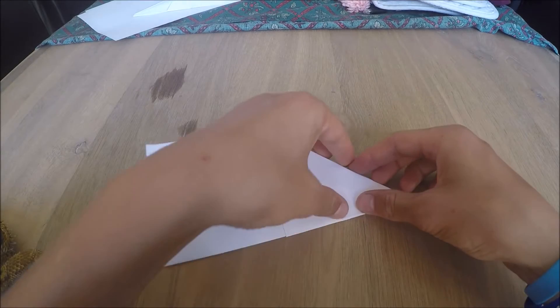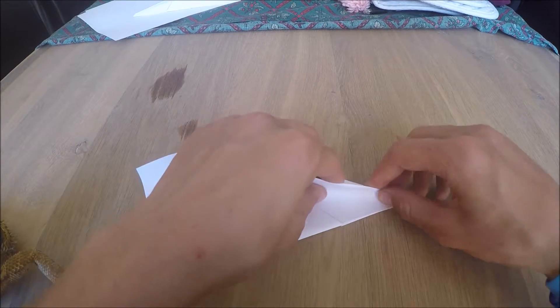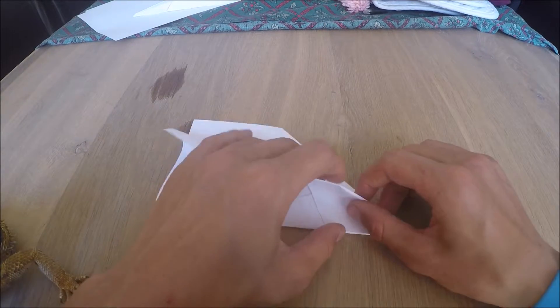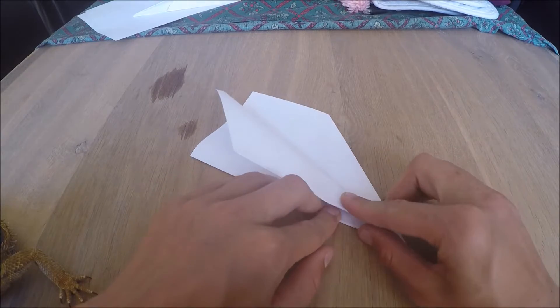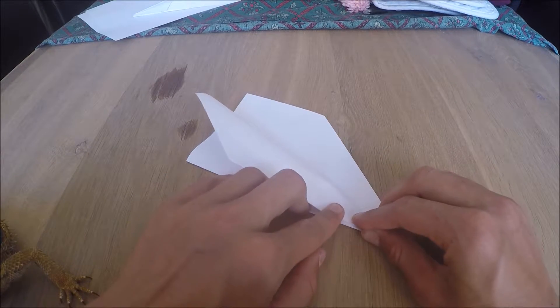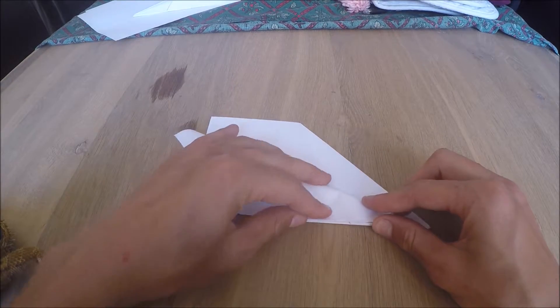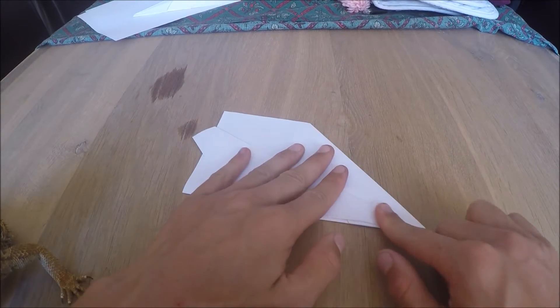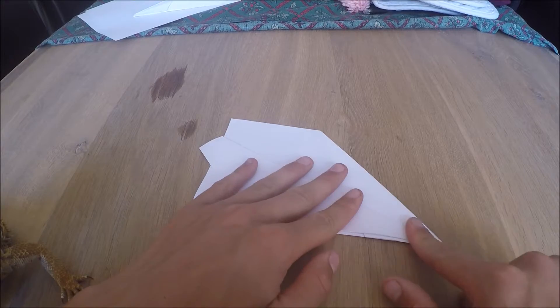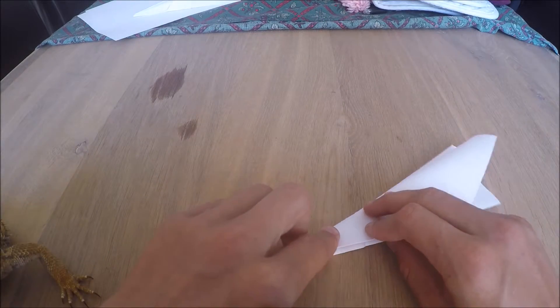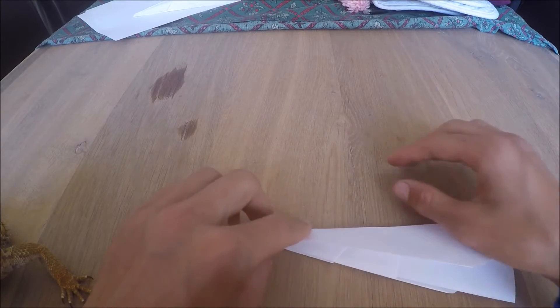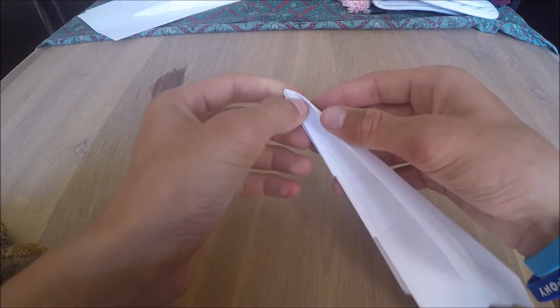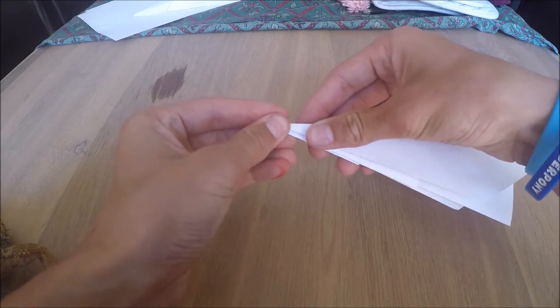Once you've done that, peel the wing back and run the top edge along the bottom edge of the plane. Then push down into the crease. Do that on the other side, and then you are ready to go.